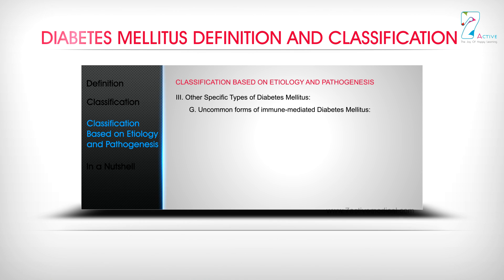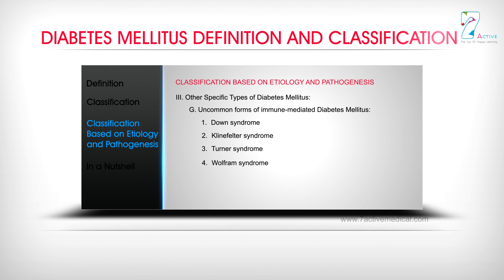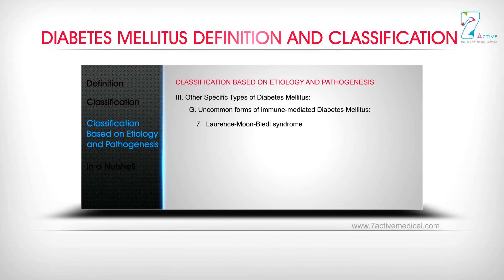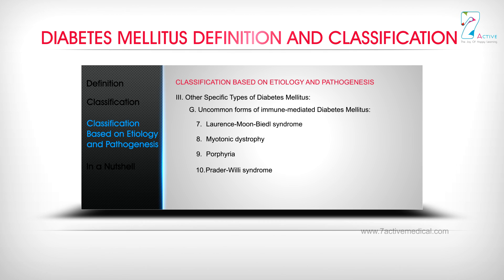G. Uncommon forms of immune-mediated diabetes mellitus and other genetic syndromes associated with diabetes: 1. Down syndrome; 2. Klinefelter syndrome; 3. Turner syndrome; 4. Wolfram syndrome; 5. Friedreich's ataxia; 6. Huntington's chorea; 7. Lawrence-Moon-Biedl syndrome; 8. Myotonic dystrophy; 9. Porphyria; 10. Prader-Willi syndrome; 11. Others.